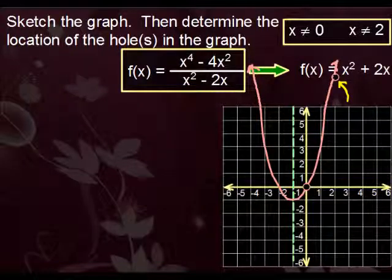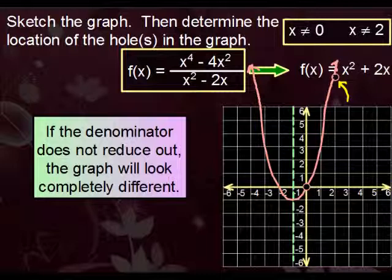One last thing before we end this video. If the denominator does not reduce out entirely, this graph will look completely different. Remember, this is all predicated on the fact that the denominator cannot be zero. But we eventually managed to get the denominator to reduce out to give us a more simplified formula.